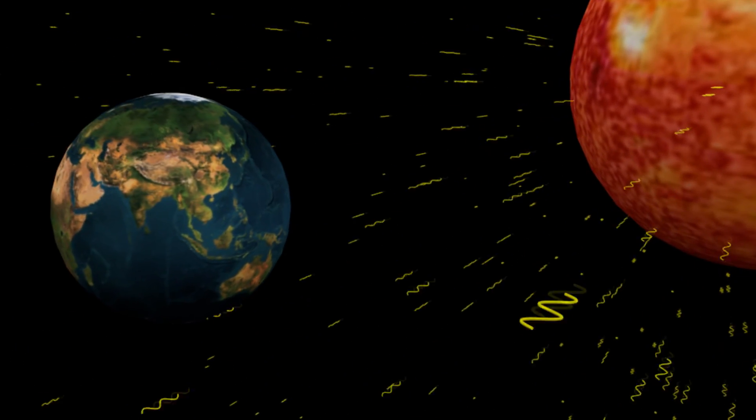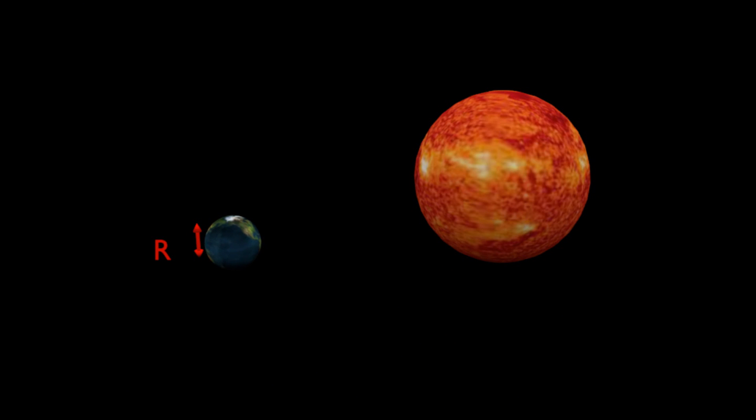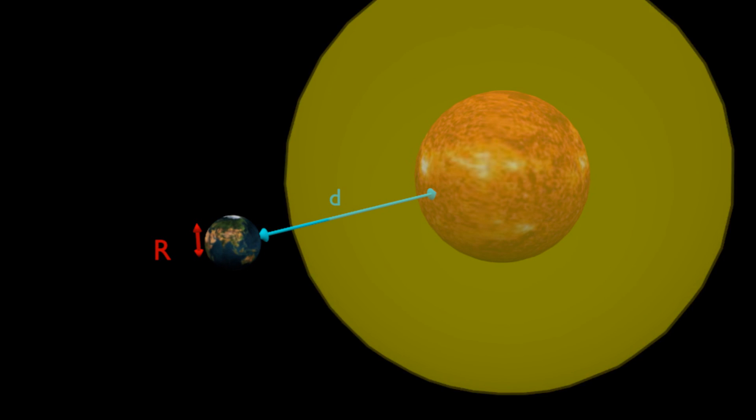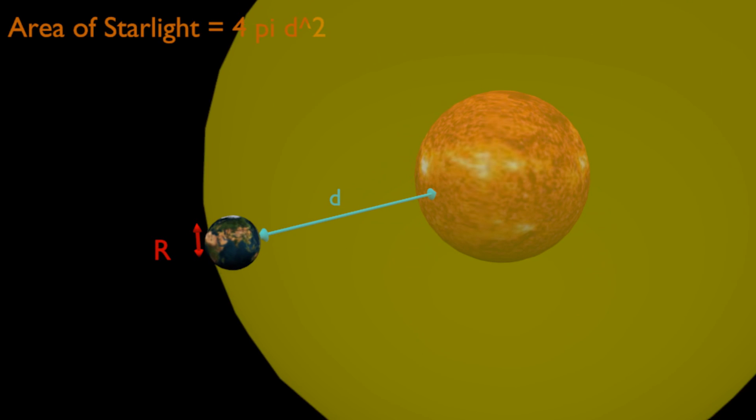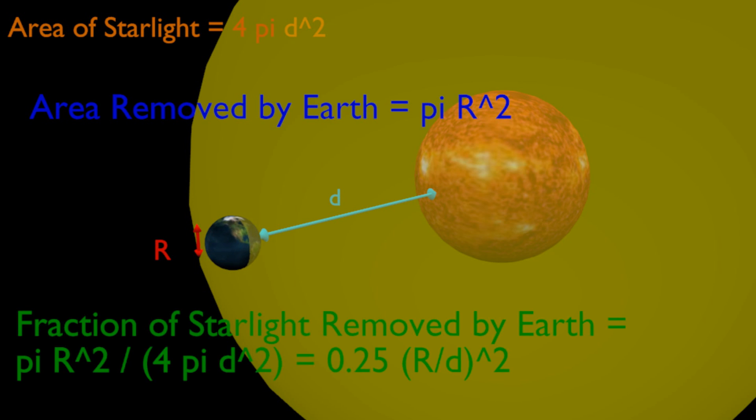We can calculate the fraction of starlight that is intercepted by earth as follows. Let r be the radius of the earth and d the distance between the earth and the star. By the time that the light from the star reaches the earth, it is spread out over a sphere of radius d in area 4 pi d squared. The earth intercepts a disk of radius r from the sphere of light, and this removes an area pi r squared from the expanding sphere of light. Thus, the fraction of starlight intercepted by the earth is pi r squared, divided by 4 pi d squared, or 0.25 r over d squared.